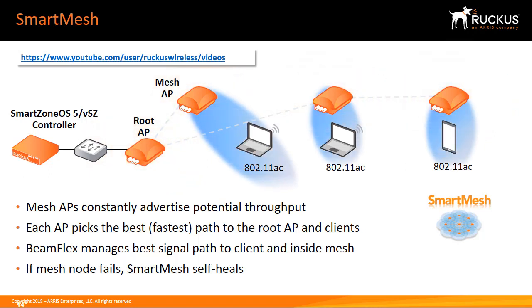Wireless clients associate with the meshing APs. BeamFlex manages the best signal path to the clients inside the mesh, and is also used to manage the best signal paths within the mesh topology. Mesh nodes constantly monitor the mesh links, and if any mesh links experience problems or are down, the remaining nodes automatically reconfigure without intervention.